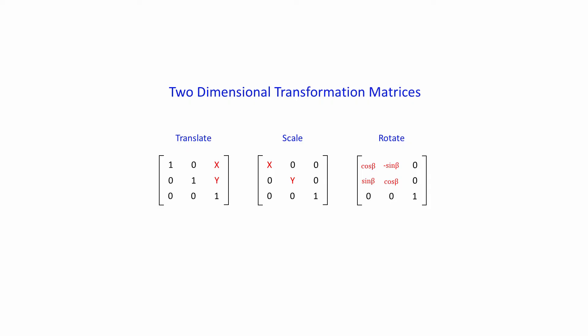However, to allow any combination of transformation matrices to be multiplied together so that a single matrix could encode multiple transformations, it was necessary to use 3 by 3 matrices for scaling and rotation as well.